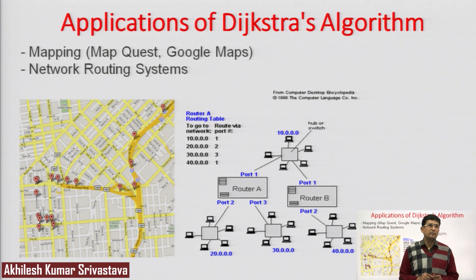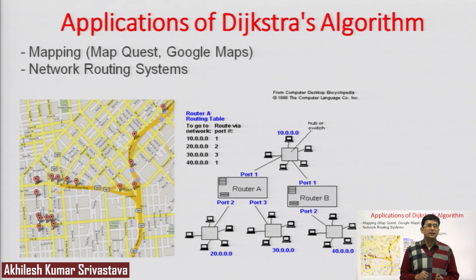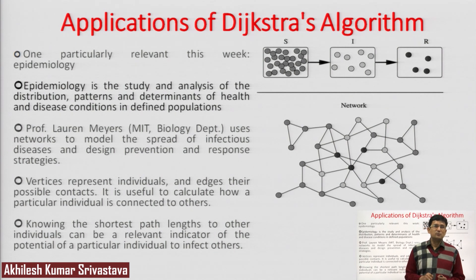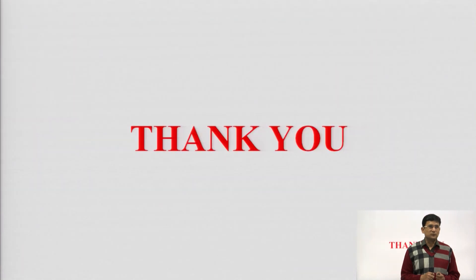There are three applications to remember. One is how we can find out the mapping of stations and the shortest path between pairs of stations on Google Maps. Another is the routing process in a network — when you want to send data from source to destination, packets are sent via the shortest path selected. Another one is epidemiology, where we find how a disease spread in a population — you have a recent example with COVID-19. Thank you.